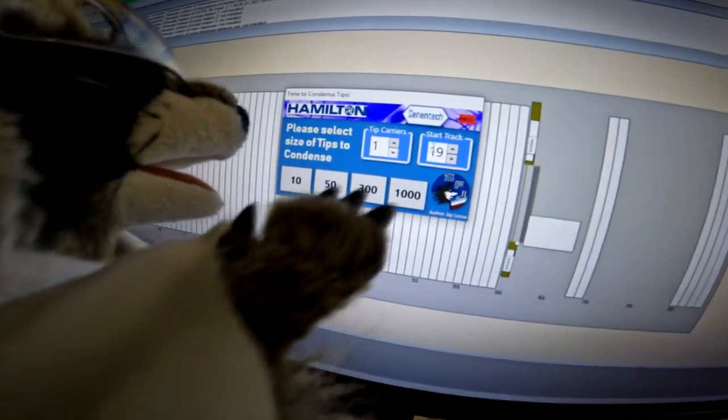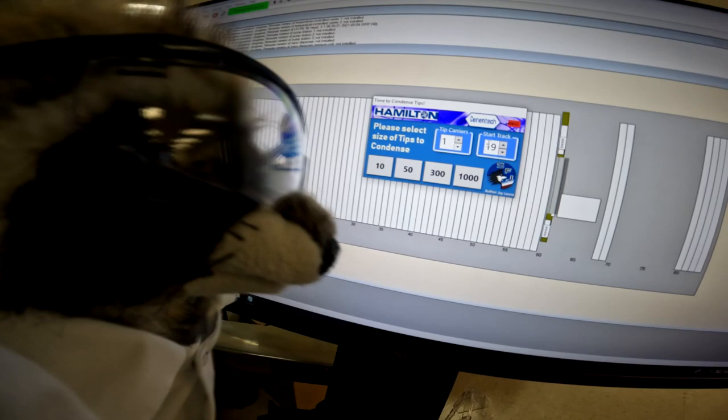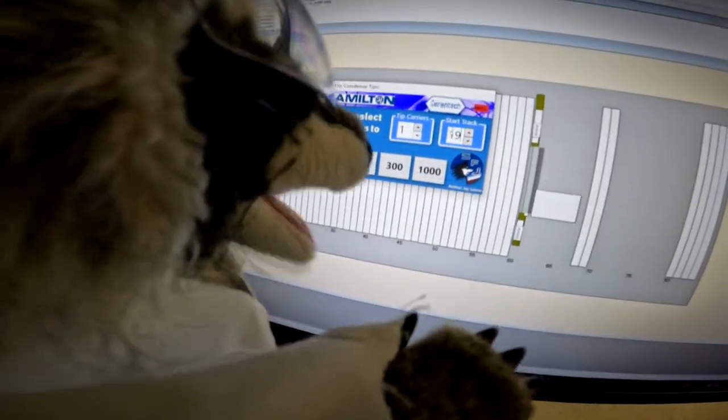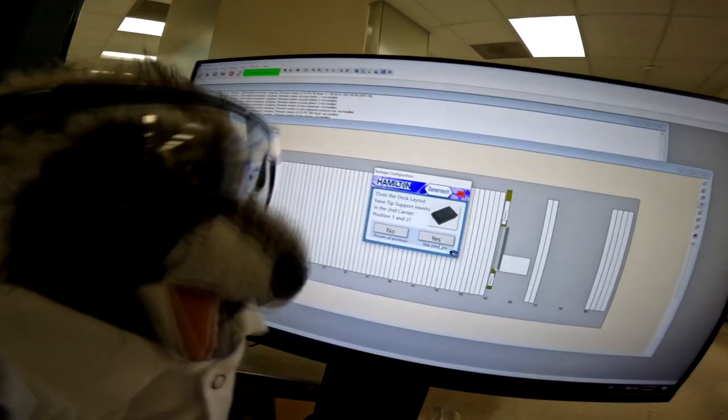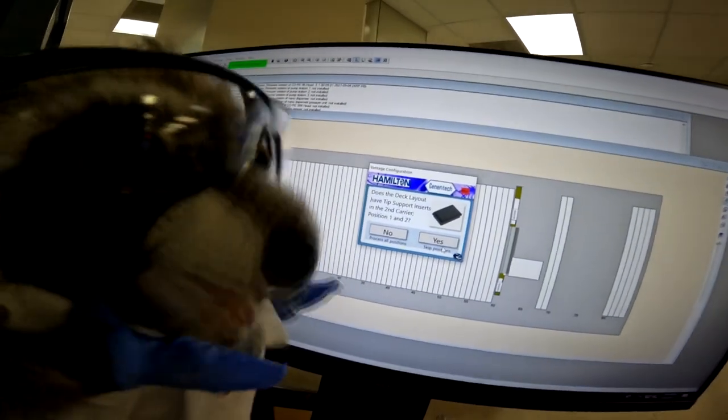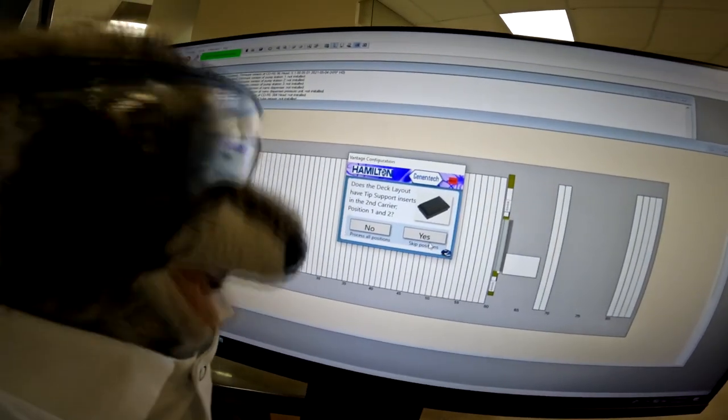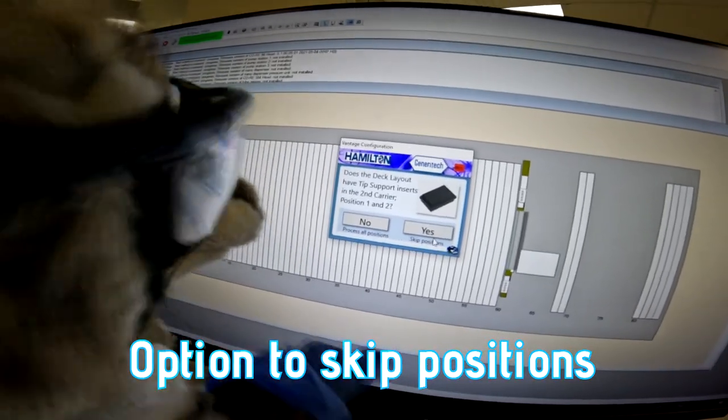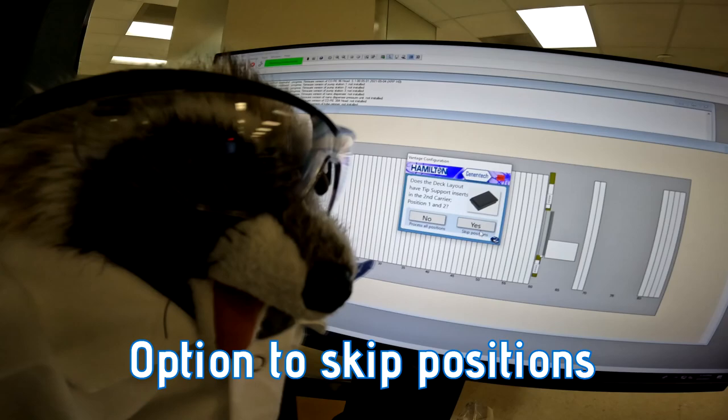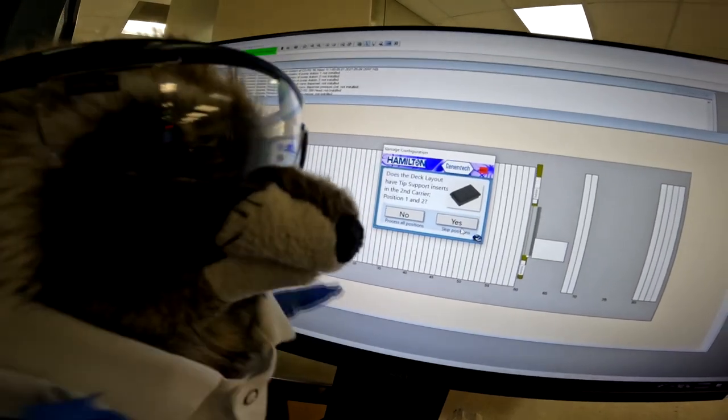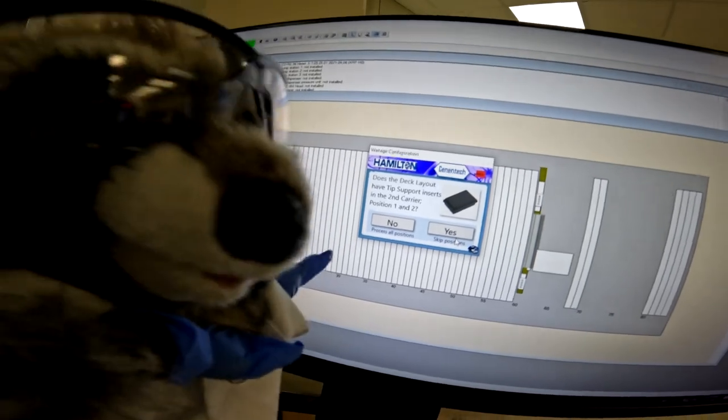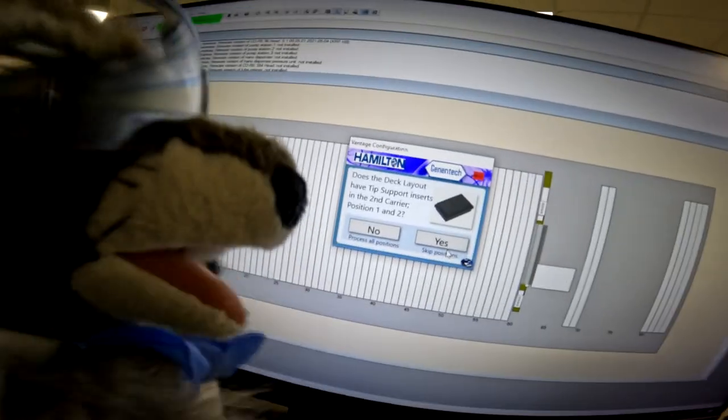Okay, now that's done, time to hit that one. Oh, it's not touch screen! All right, we're going to have to click 1,000. Now we have the next interface, and this is because some layouts, at least in our lab, have these tip inserts and you don't want the tips to be put into those inserts. You want to skip those positions.